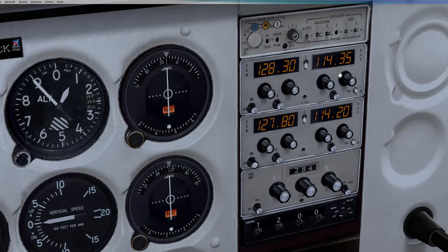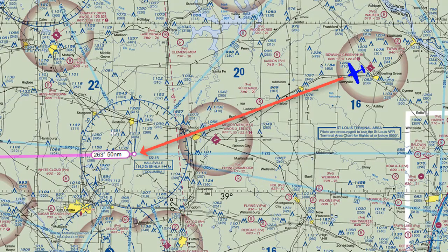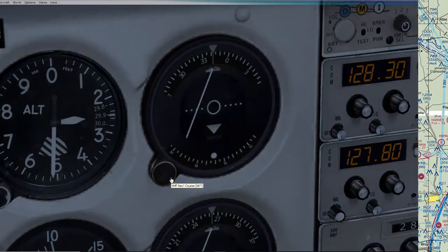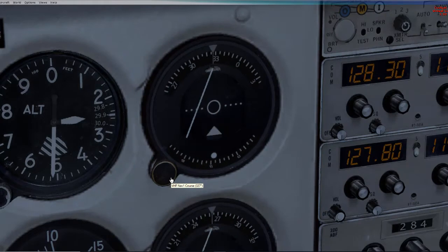Going back to NAV1, we will set the radio to 114.2, but we won't worry about setting the VOR indicator just yet, as I want to show you the trick when we get in the air. We know the Hallsville VOR is to the west-southwest of Bowling Green Airport, so we will point our plane in that general direction after we take off. So we've taken off from Bowling Green, and we are flying west-southwest.